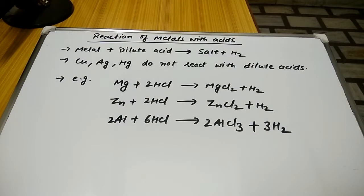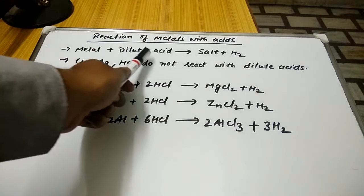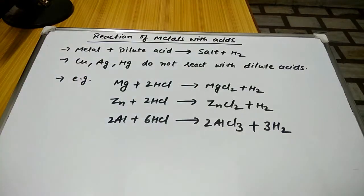How do we look at the metals and how do we look at the acids? Metal plus dilute acid gives salt plus hydrogen.